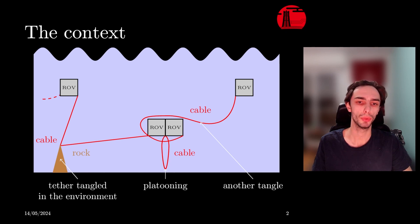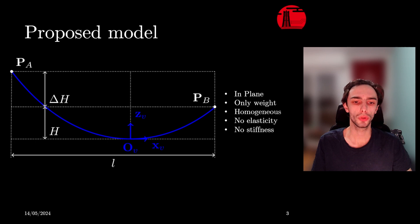To this end, we want a model of the cable's shape that is fast to compute and reasonably accurate. The catenary model corresponds to a cable only subjected to its own weight. The cable is assumed to be homogeneous, non-elastic and have no stiffness. And the curve describing it, the catenary curve, is simply defined in a plane.